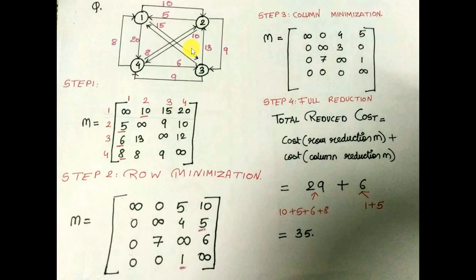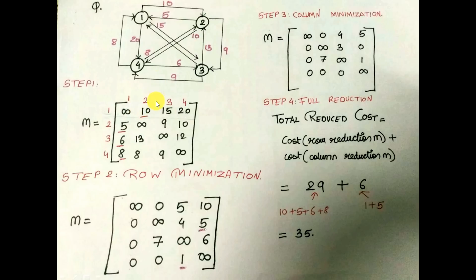Traveling Salesperson Problem is very important from an examination perspective — it usually comes for 10 marks. A graph will be given and from that graph we create a matrix. Sometimes the matrix may be given directly. In some books you will find a hyphen or dash in the matrix — you can replace those with infinity. The very first step, if a graph is given, is to create a matrix.